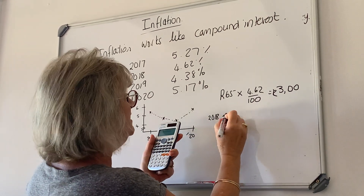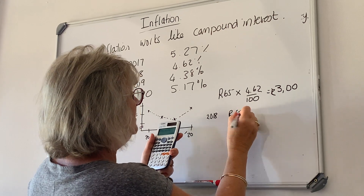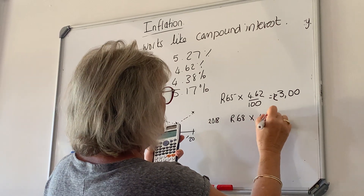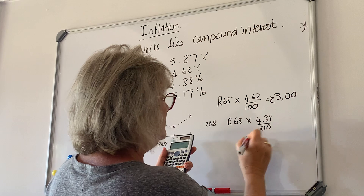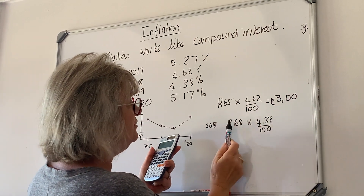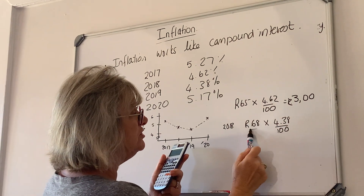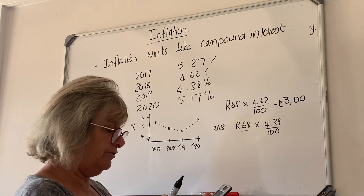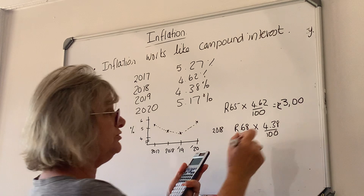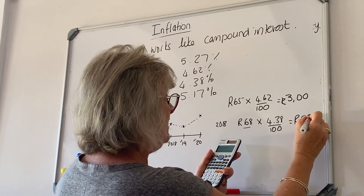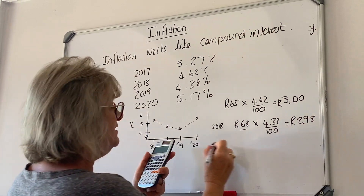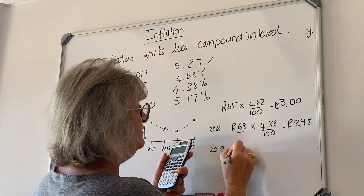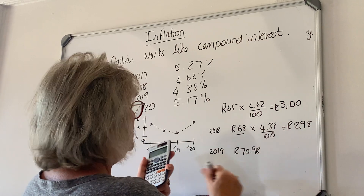So by the beginning of 2019, the price would be 68 rand. During 2019 the price goes up by 4.38%. Notice that I've added the increase each time — this is why inflation is like compound interest, because the base amount changes each year. So 68 times 4.38 divided by 100 equals 2 rand 98 cents, rounded to the nearest cent, giving a price of 70 rand 98 at the beginning of 2019.